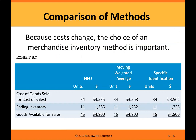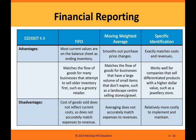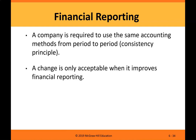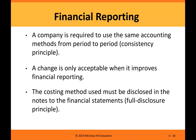Comparison of methods. Because costs change, the choice of an inventory method is important. Exhibit 6-9 shows the advantages and disadvantages between FIFO, moving weighted average, and specific identification. A company is required to use the same accounting methods from period to period — the consistency principle. A change is only acceptable when it improves financial reporting. The costing method used must be disclosed in the notes to the financial statements — the full disclosure principle.